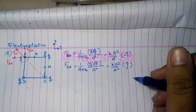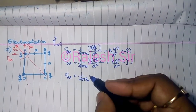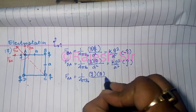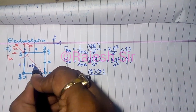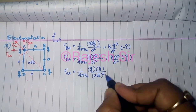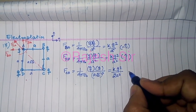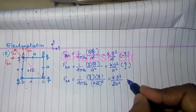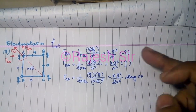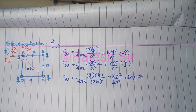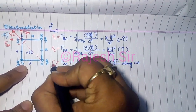The force that C applies on A: C is at the opposite corner, so the distance is the diagonal a√2. Thus F_CA = (1/4πε₀) × q²/(a√2)² = kq²/(2a²), directed along CA. I'll call the force from B as F1, from D as F2, and from C as F3.